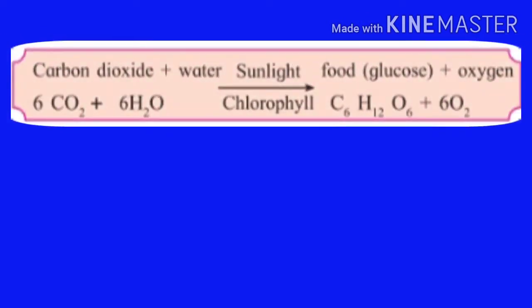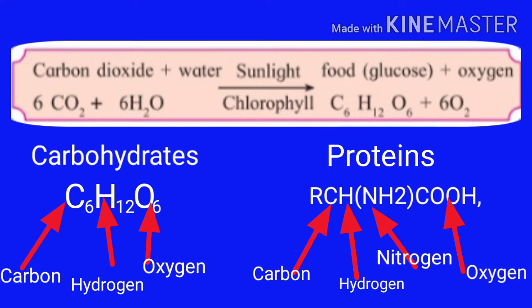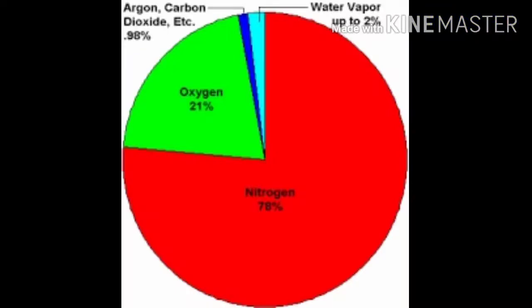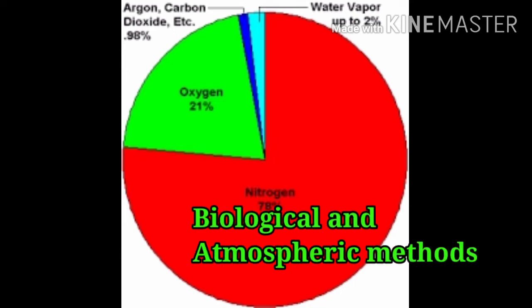Plants produce carbohydrates by the process of photosynthesis. Carbohydrates are made from carbon, hydrogen, and oxygen. Proteins are made from carbon, hydrogen, oxygen, and nitrogen. Plants cannot utilize gaseous nitrogen directly; it needs to be fixed, that is, converted into compounds. Fixation of nitrogen occurs by biological and atmospheric methods.